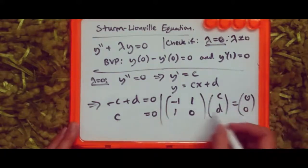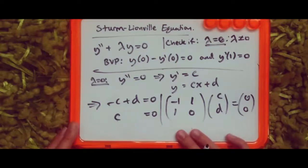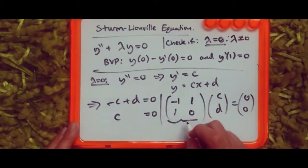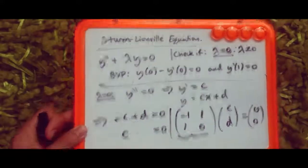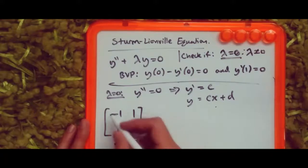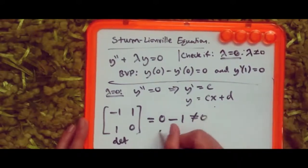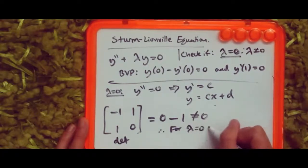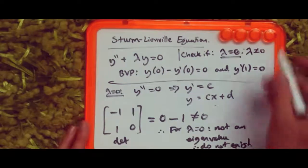The final step is to take the determinant of the coefficient matrix. If the determinant equals zero, eigenvalues exist; if not, they don't. Computing: (-1)(0) minus (1)(1) gives minus one, which does not equal zero. Hence for lambda equals zero, this is not an eigenvalue — no eigenvalues exist in this case.